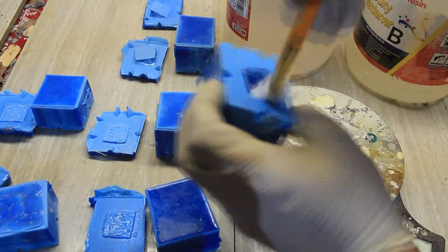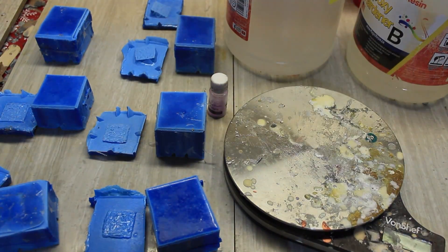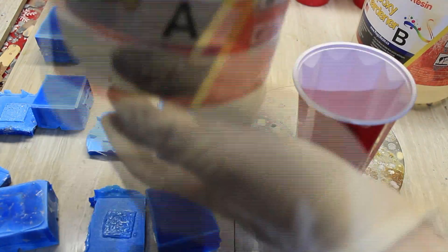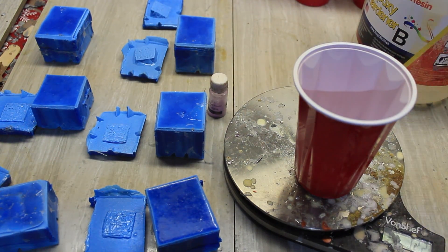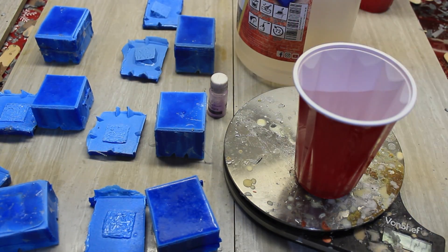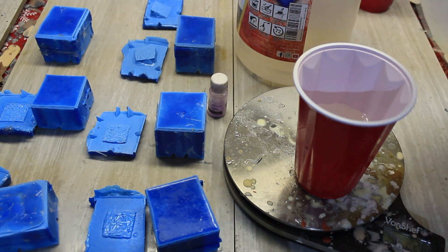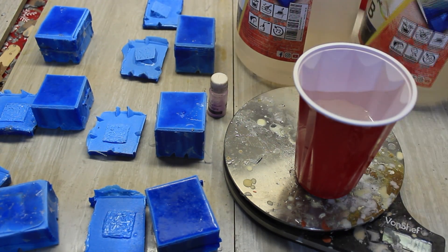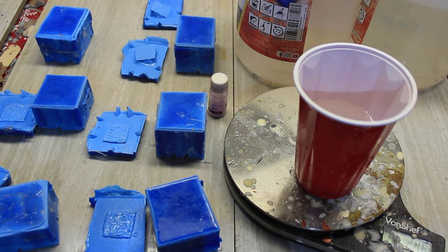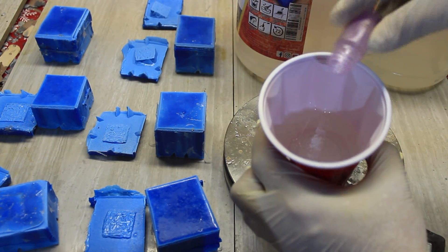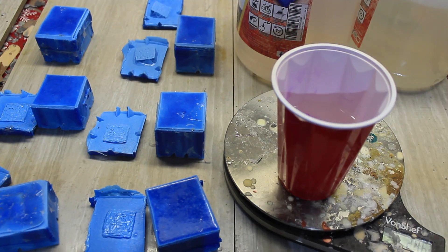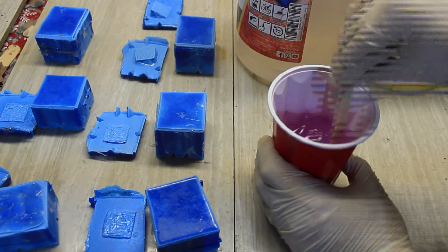Next we have part A and part B. We measure them out - it's a one-to-one ratio, so that's pretty easy. In this video I'm using Magic Craft resin, a clear tabletop or craft epoxy resin made in the USA.